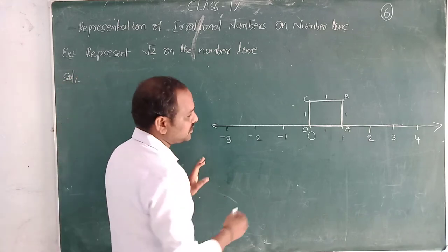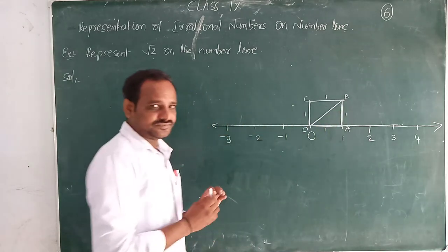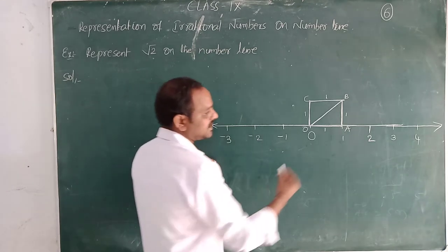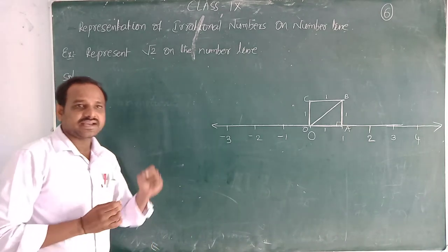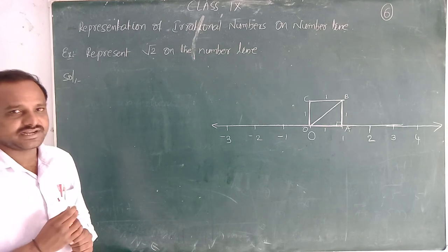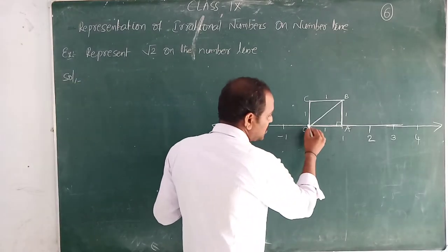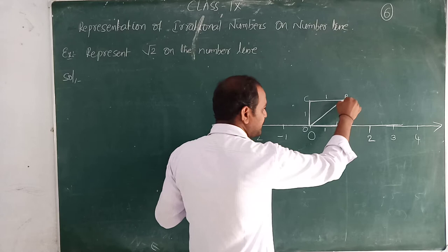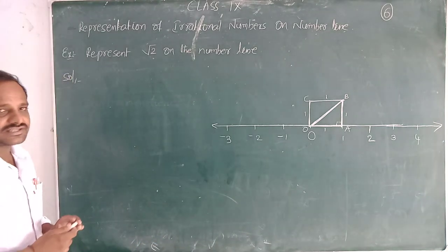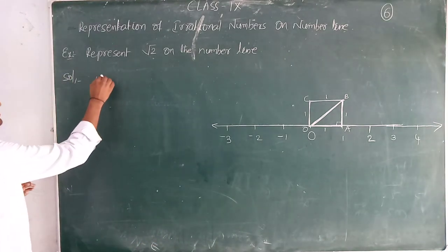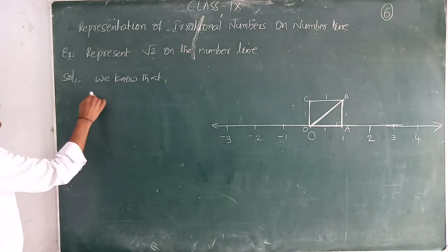Now you can join OB. If you observe exactly that figure, what can you say about angle A? It makes exactly 90 degrees. So triangle OAB is a right angle triangle. Now we know that in a right angle triangle we can apply the Pythagoras theorem.